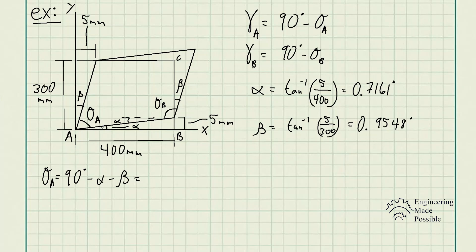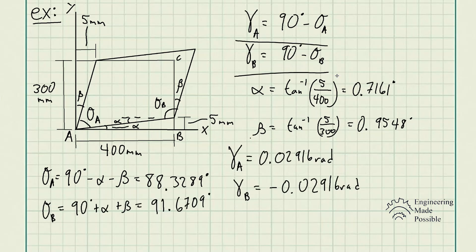Now, finally, we could actually solve for the shear strain at point A and point B using these equations here. So the shear strain at A is positive 0.02916 radians and the shear strain at B is negative 0.02916 radians. Keep in mind, always convert the degrees into radians because this is how we write the shear strain.